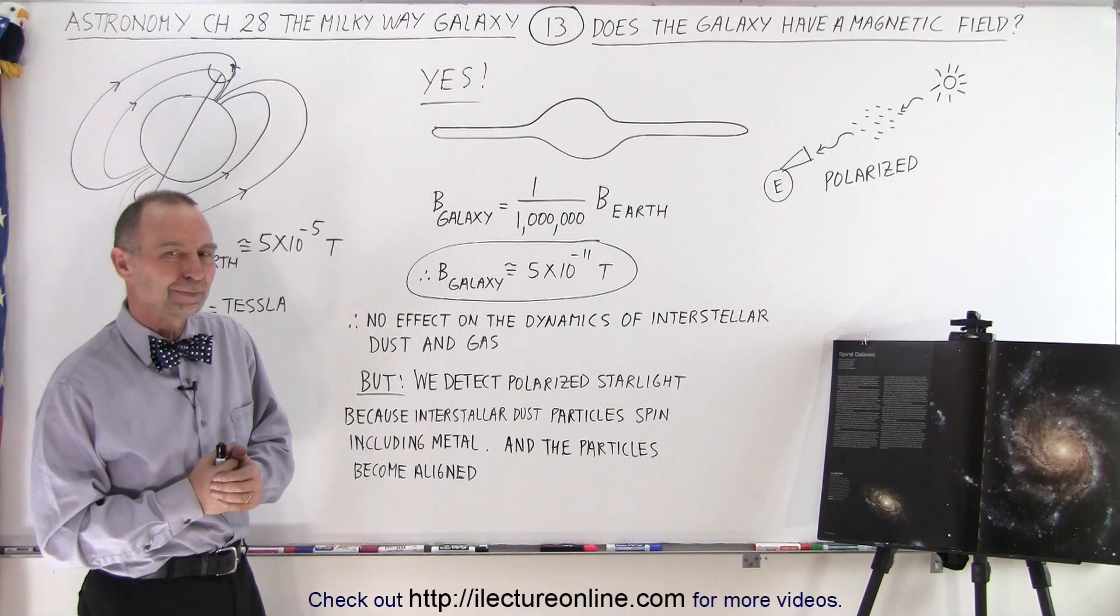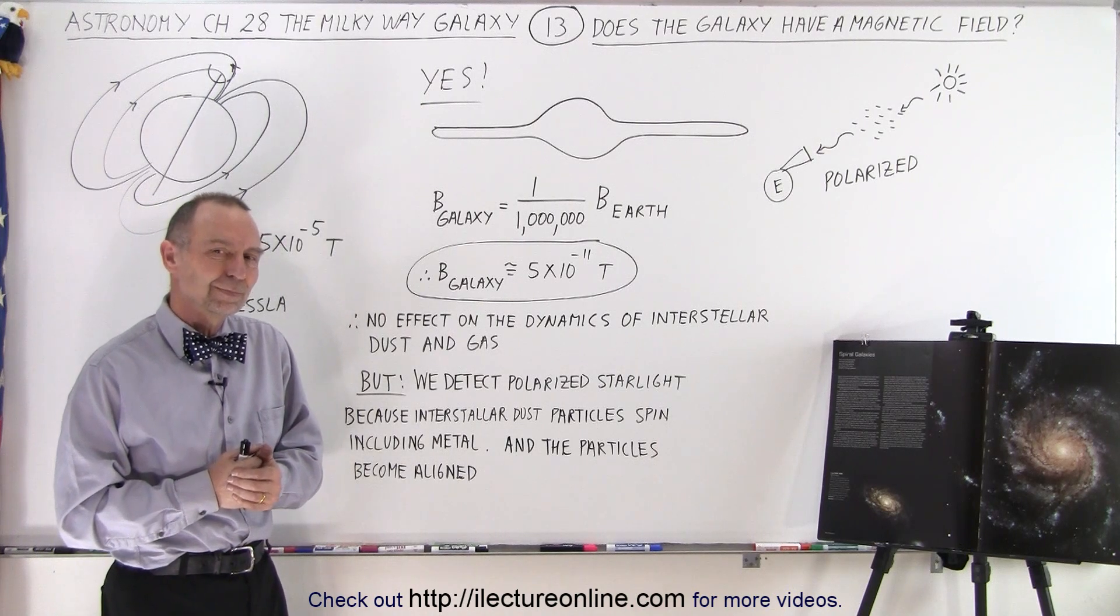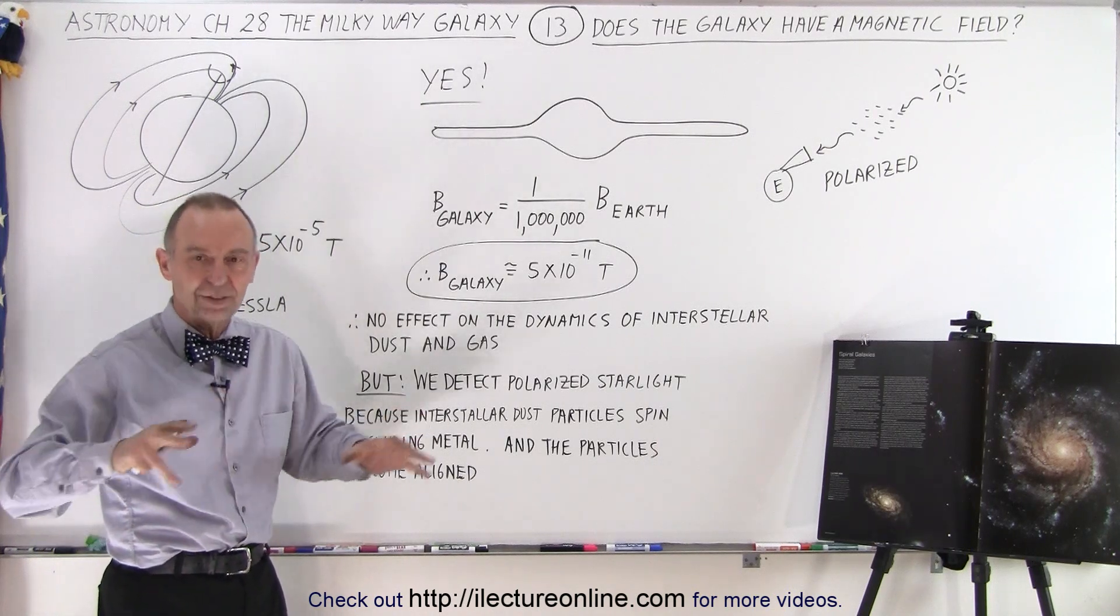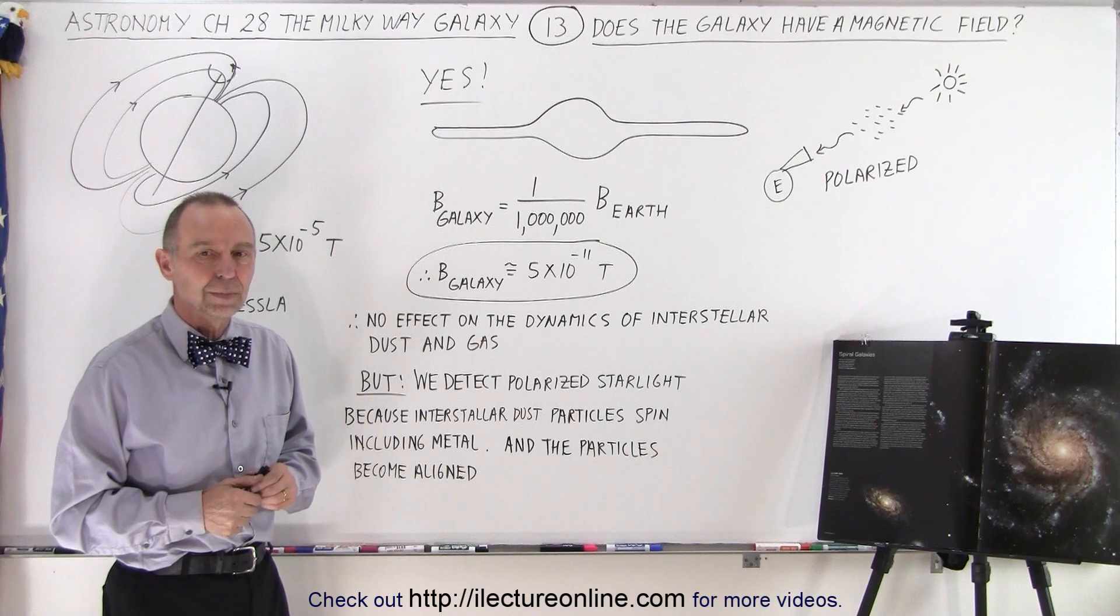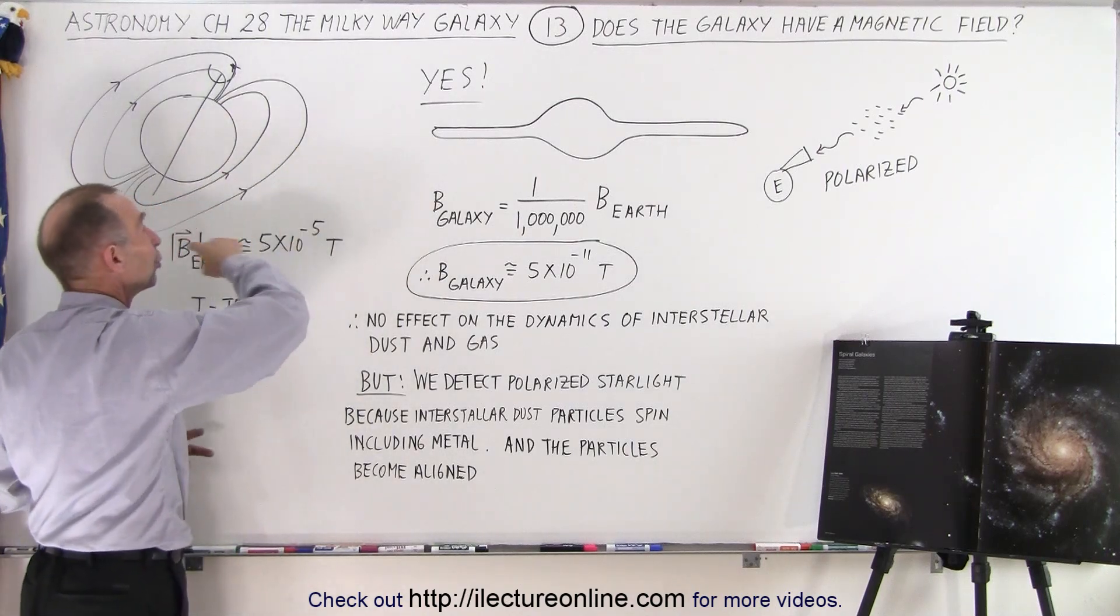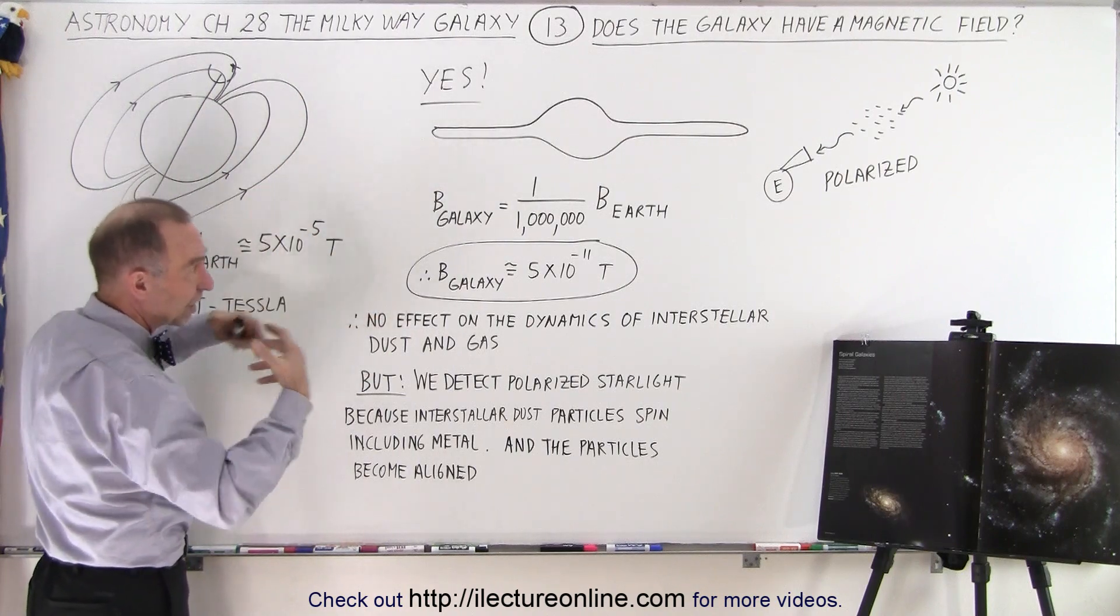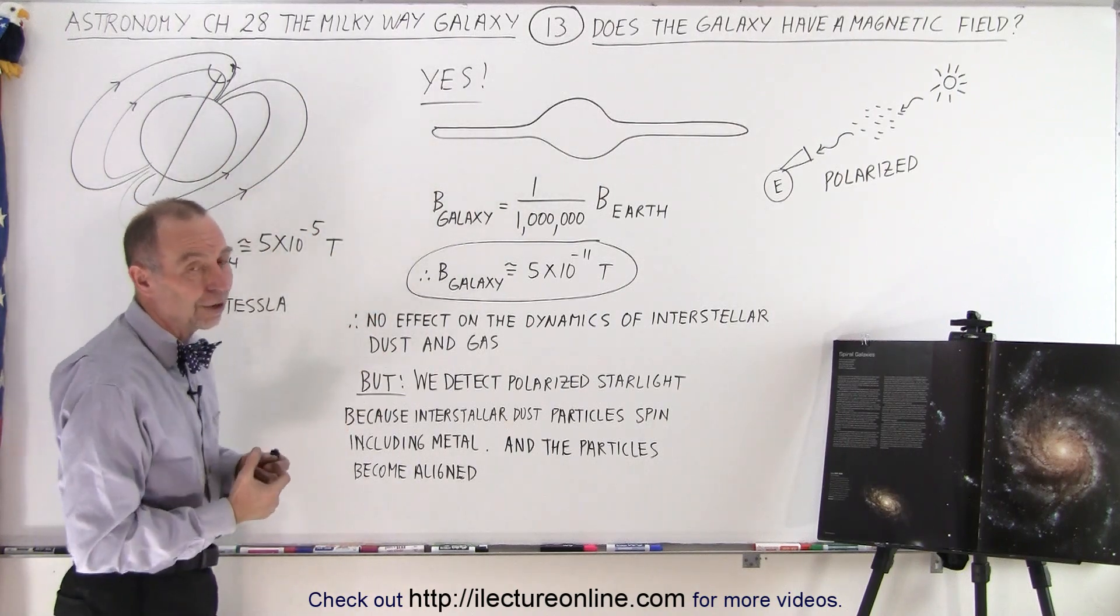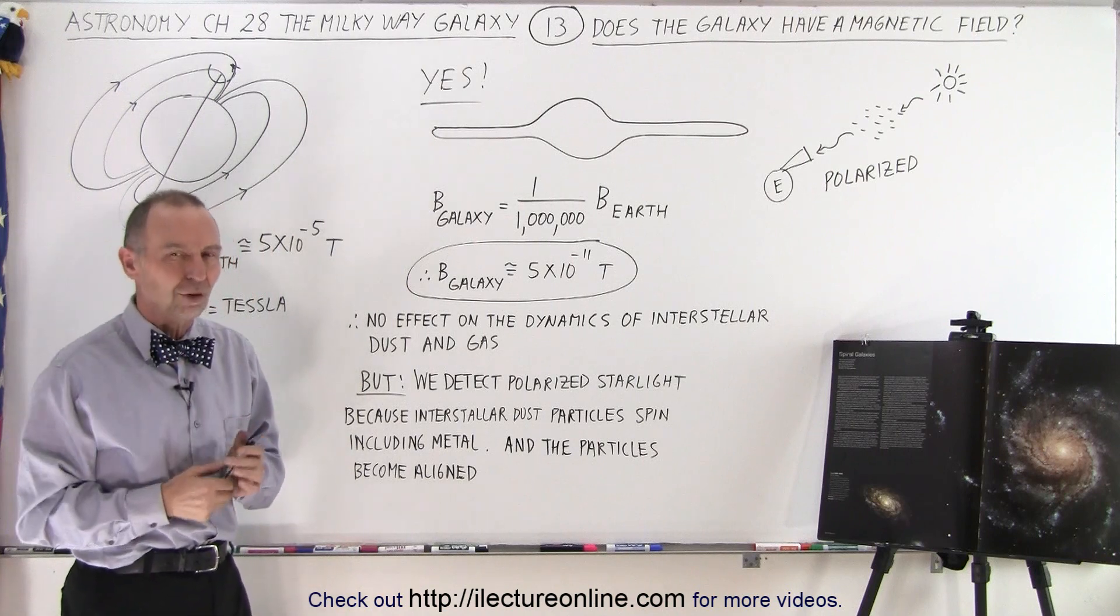So does the magnetic field go through the galaxy? It's permeating the galaxy. That's correct. Well, all magnetic fields have a circular loop. So yes, we have a circular loop because of the rotation of the galaxy. So we have kind of a similar structure.